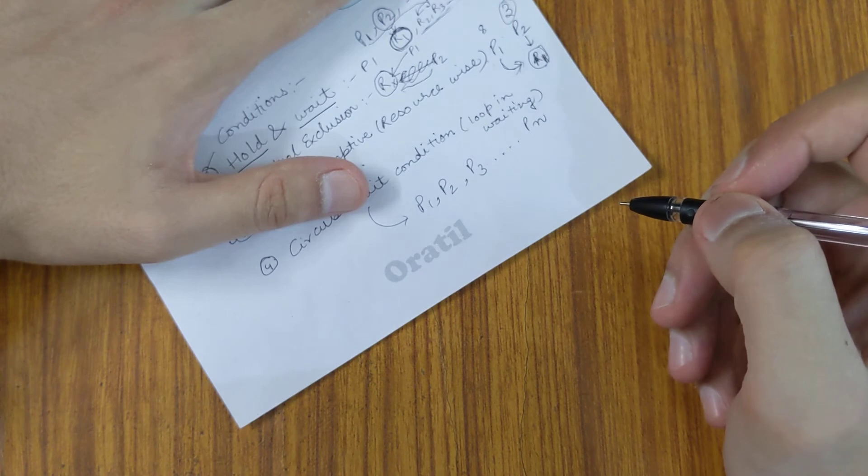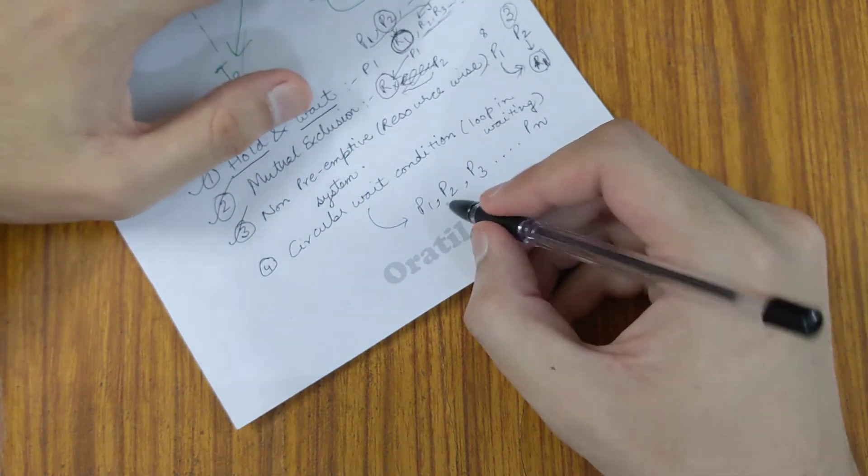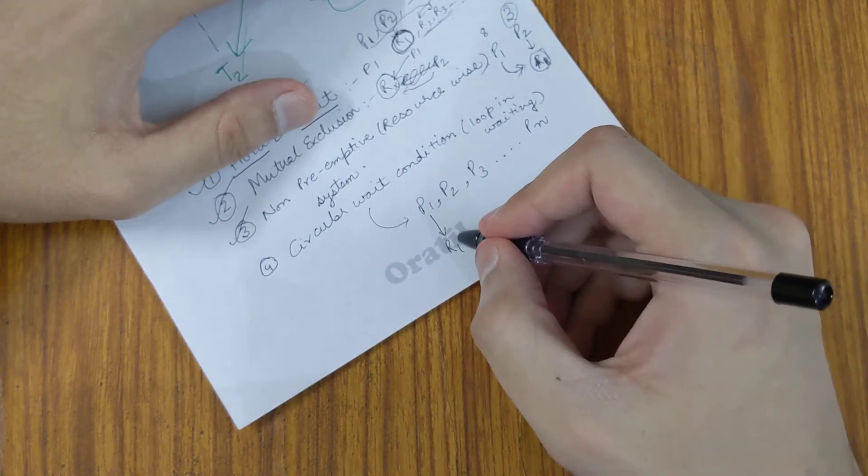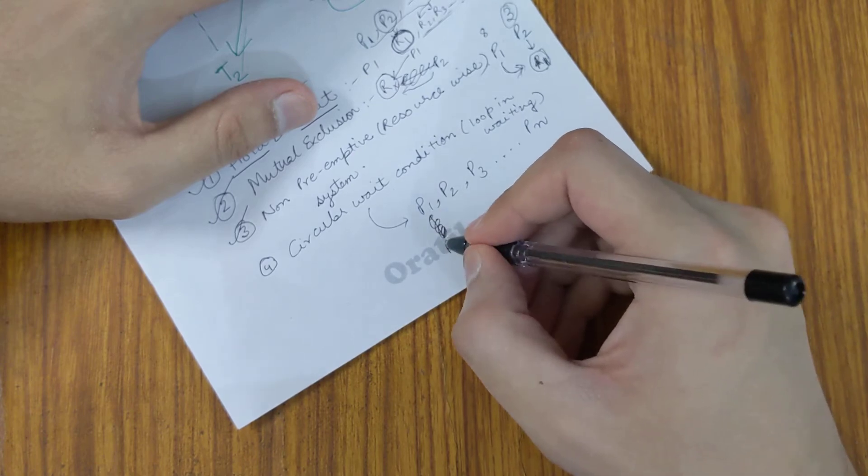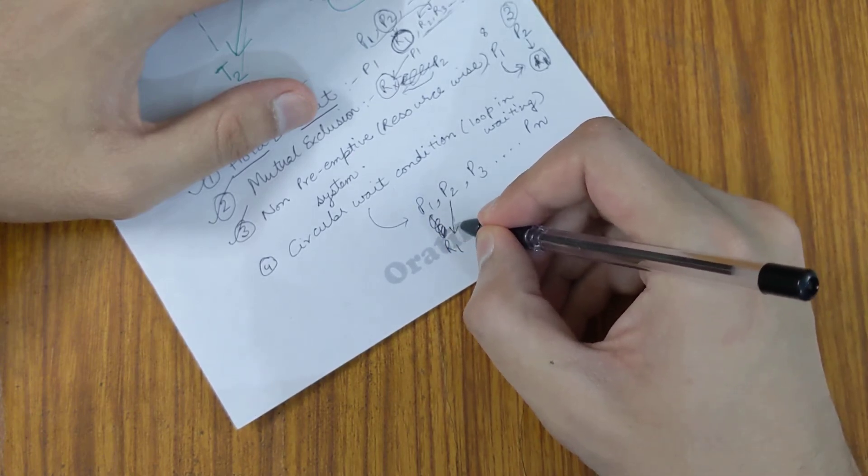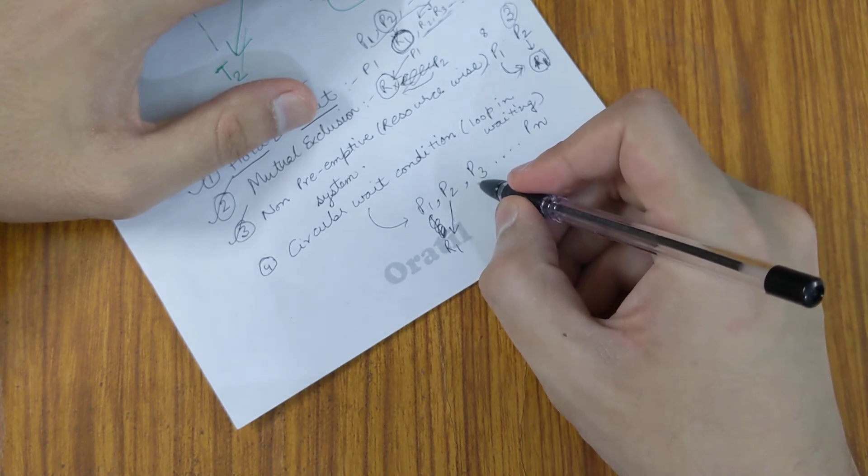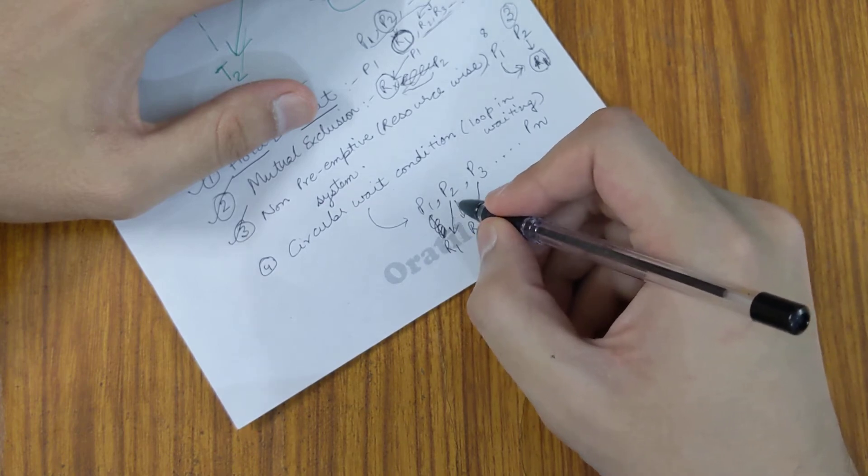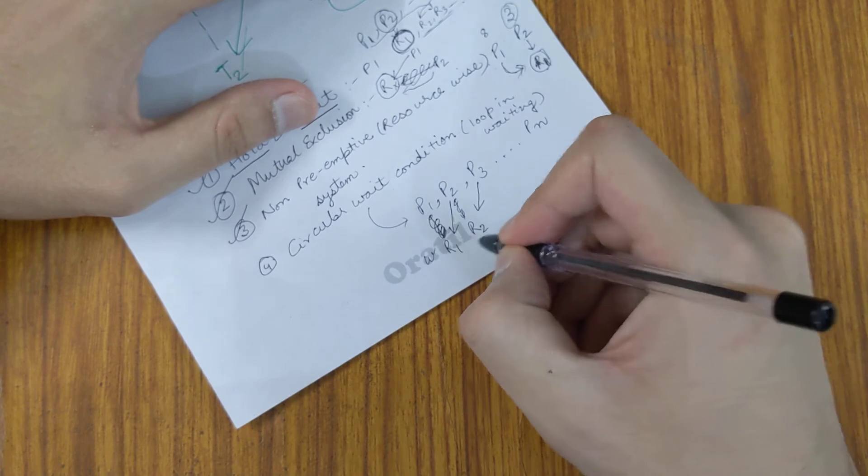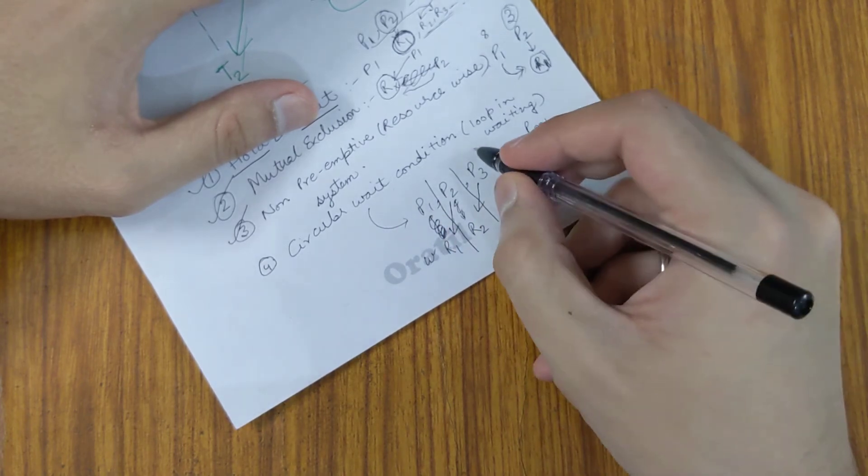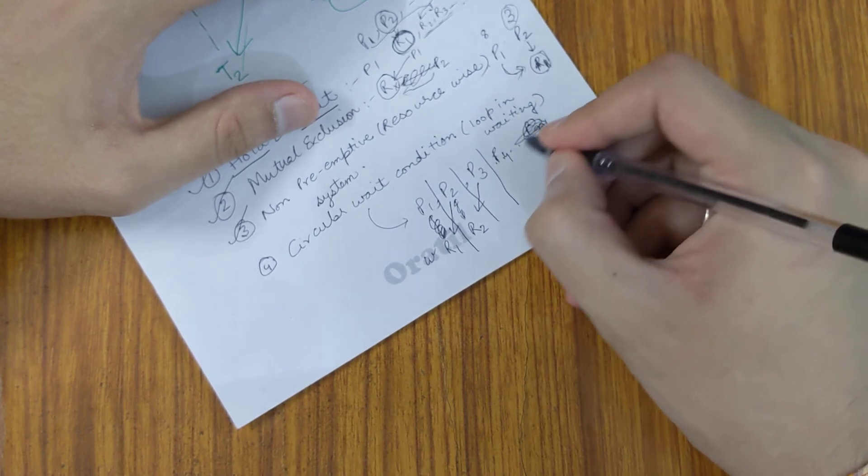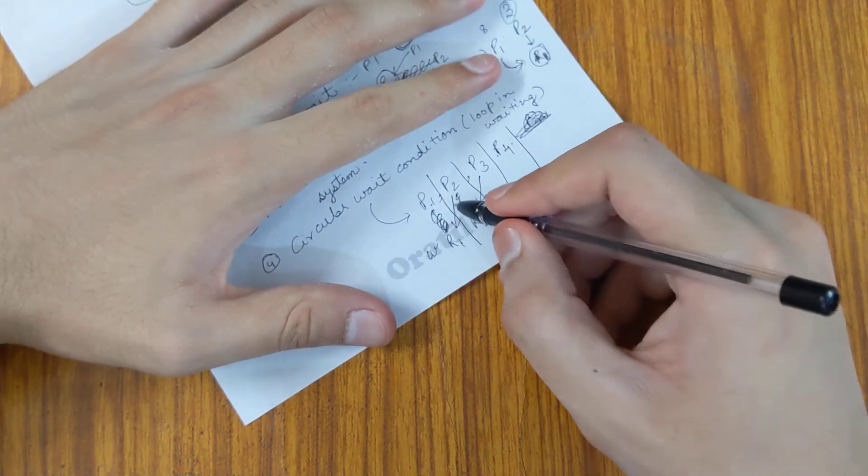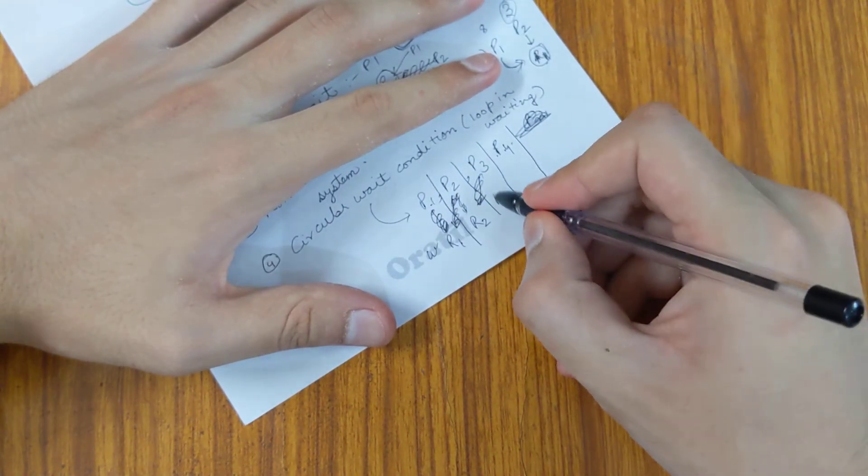P1 is waiting for a resource called R1, but that is held by P2. P3 is holding R2, which is required by P2. Let's say we have four processes. We can represent resources as R1, R2, R3, R4. P2 is holding R2, P1 is holding R1...